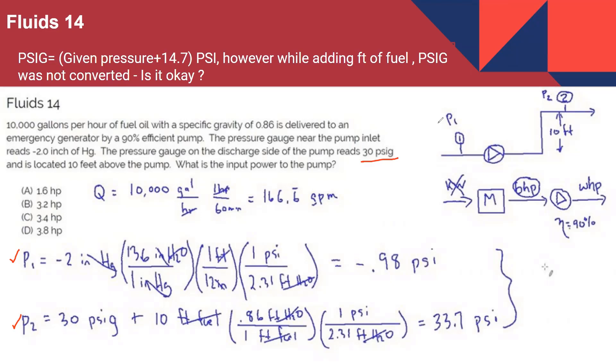So I actually went to the problem. So if you look at the P1 and P2, right? So P1 is 0.98 PSI. Minus, minus 0.98. Yeah. Minus 0.98.